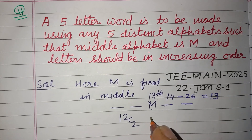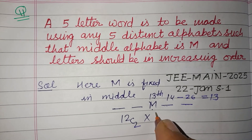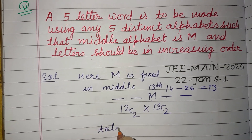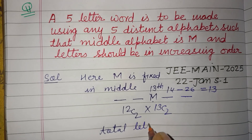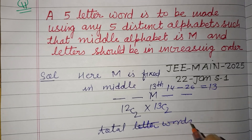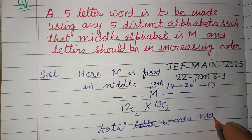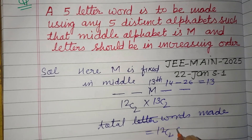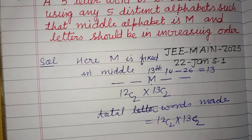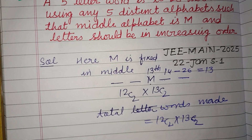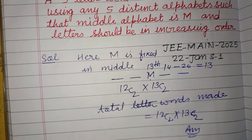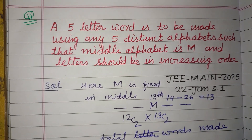So the total number of words that can be made is 12C2 × 13C2. This is the answer. I hope you got it — please like the video, subscribe to the channel, thanks for watching.